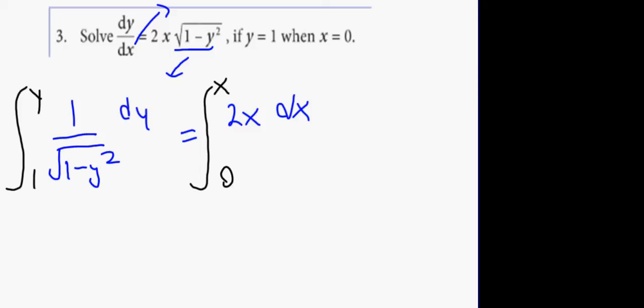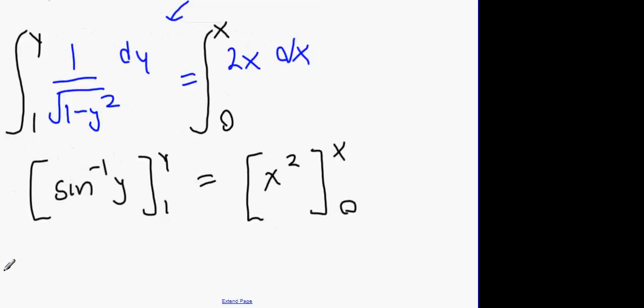Now, when we integrate 1 over square root of 1 minus y squared, okay? Well that turns out to be a sine inverse y. It's in your tables. Sine inverse y. And that's going to be from y to 1. Okay? Next part is, integrate 2x and we get x squared from x to 0. So we're going to get sine inverse y minus sine inverse 1 equals x squared minus 0 squared.